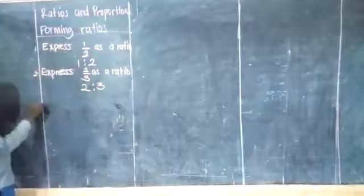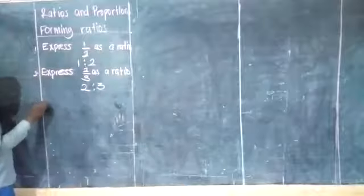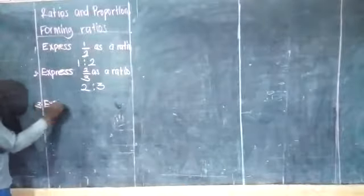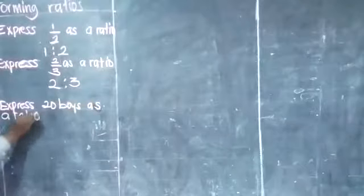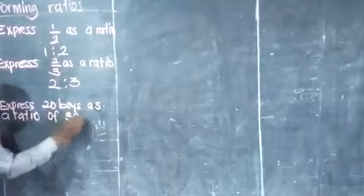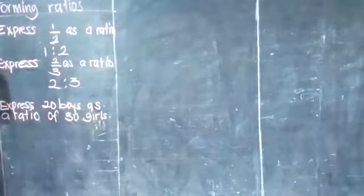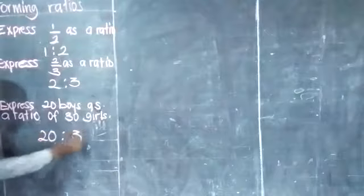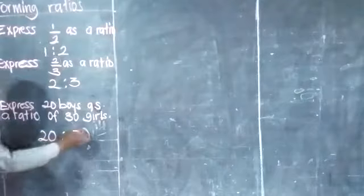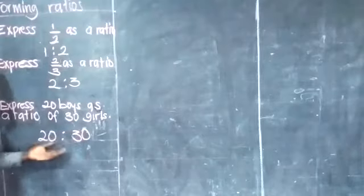Now they may give you another type of question. This time they will not give you a fraction. They will give you numbers — for example: express 20 boys as a ratio of 30 girls. Here, you will write 20 boys to 30 girls, then find a common number that will divide both numbers to their lowest terms. The common number here will be 10.